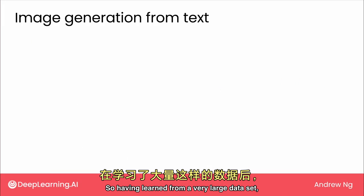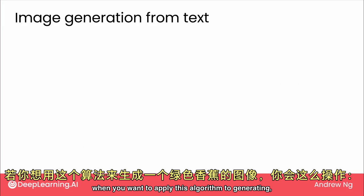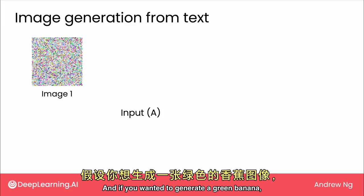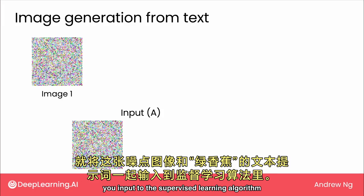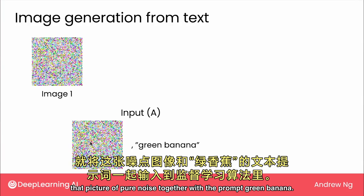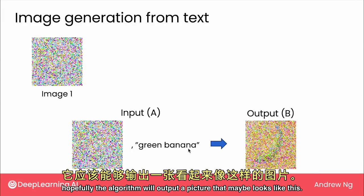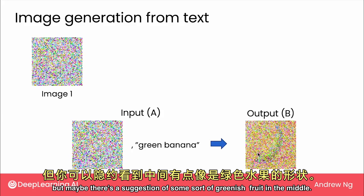Having learned from a very large dataset, when you want to apply this algorithm to generating, say, a green banana, this is what you do. Same as before, we start off with an image of pure noise. And if you wanted to generate a green banana, you input to the supervised learning algorithm that picture of pure noise together with the prompt green banana. Now that it knows you want a green banana, hopefully the algorithm will output a picture that maybe looks like this — can't see the banana that clearly, but maybe there's a suggestion of some sort of greenish fruit in the middle.